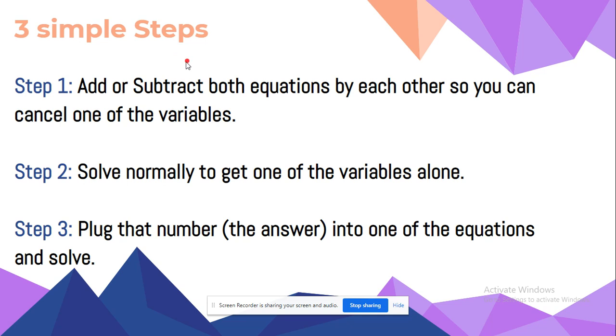There are three simple steps. Step one is to add or subtract both equations by each other so you can cancel one of the variables. Step two is to solve normally to get one of the variables alone. And step three is to plug that number or the answer into one of the equations and solve.